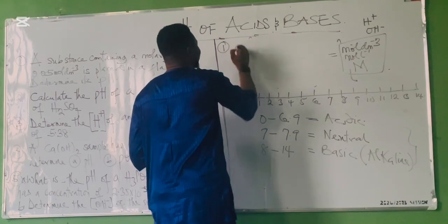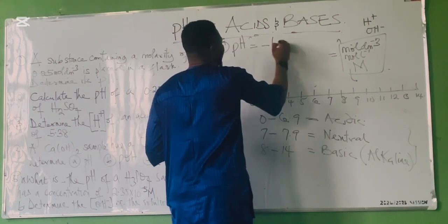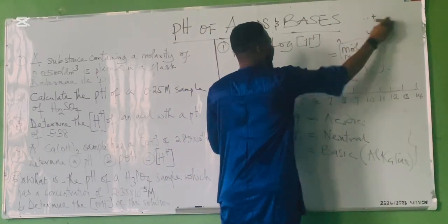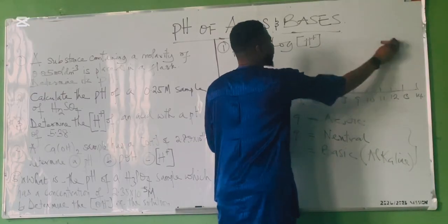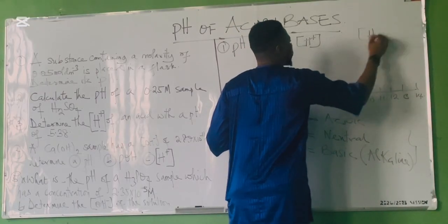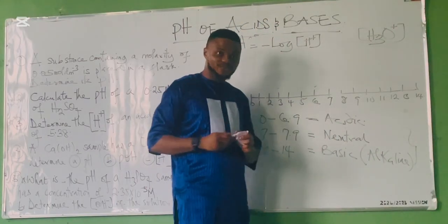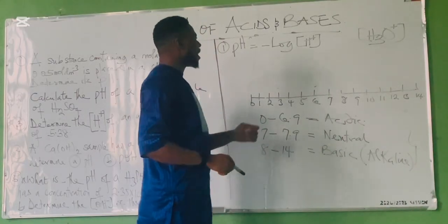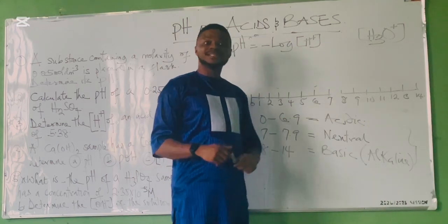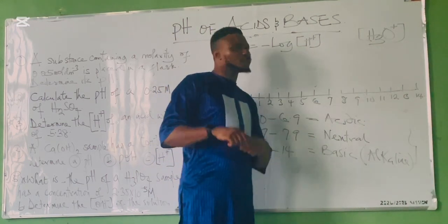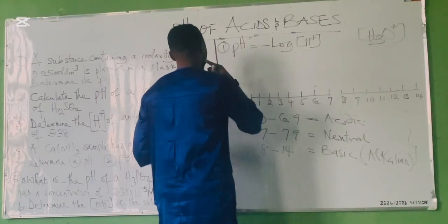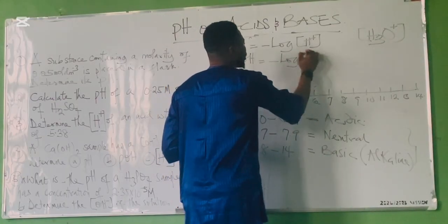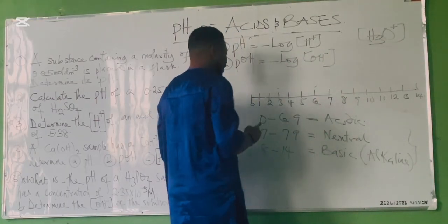The first formula: pH = −log[H⁺]. Note that hydrogen ion concentration is sometimes represented as H₃O⁺, called the hydronium ion — they mean the same thing. We also have pOH: pOH = −log[OH⁻]. Those are the main formulas for pH and pOH.